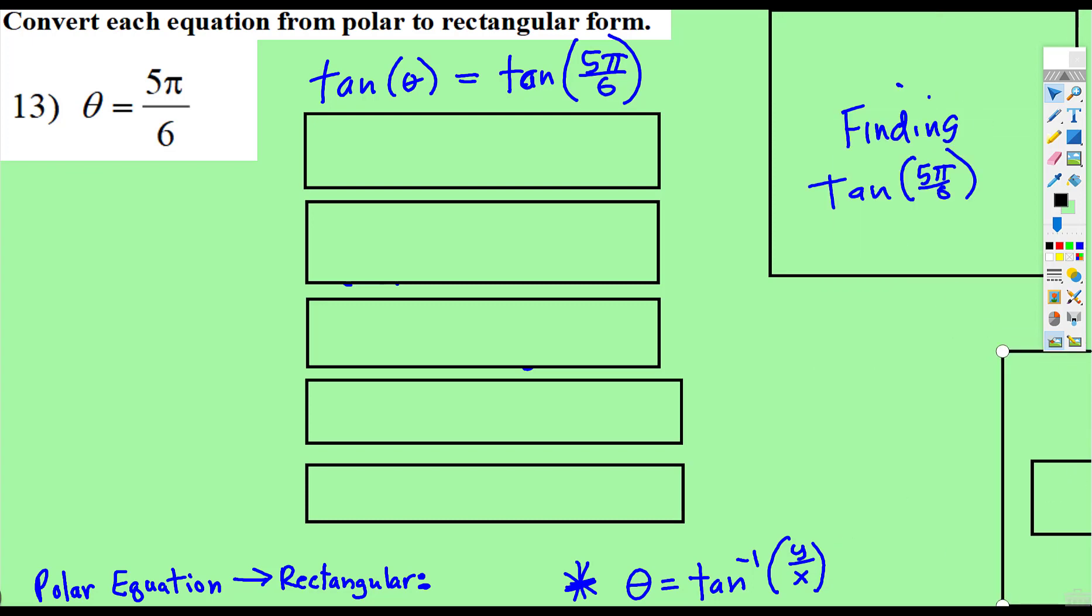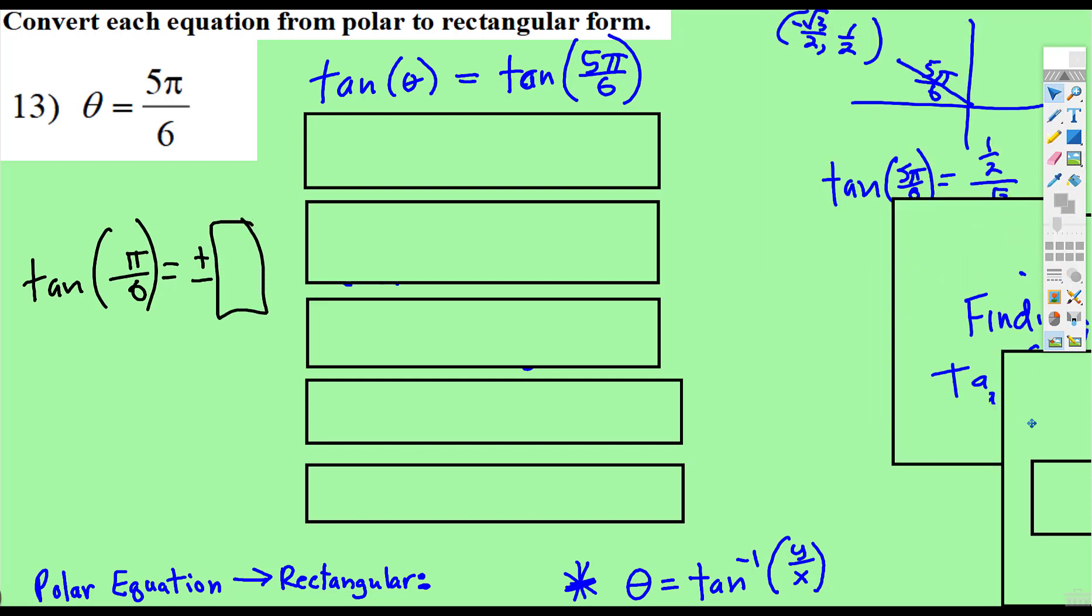So, if you don't have what tangent of all of the π/6's are positive and negative memorized, this is what you do. You locate 5π/6,